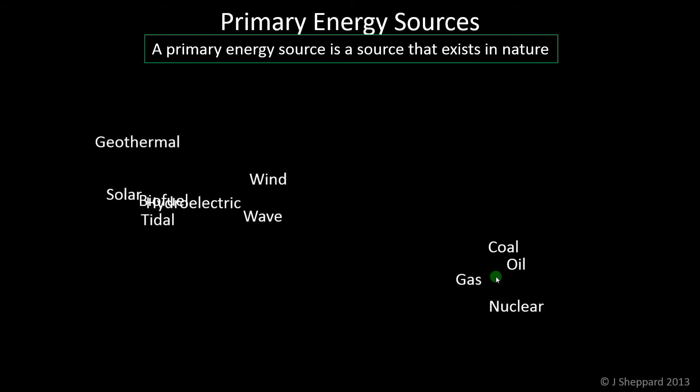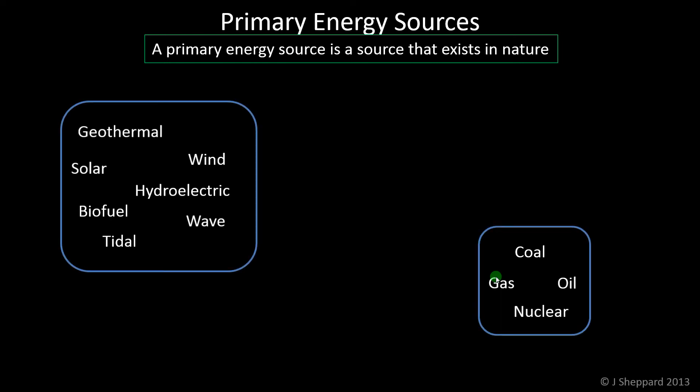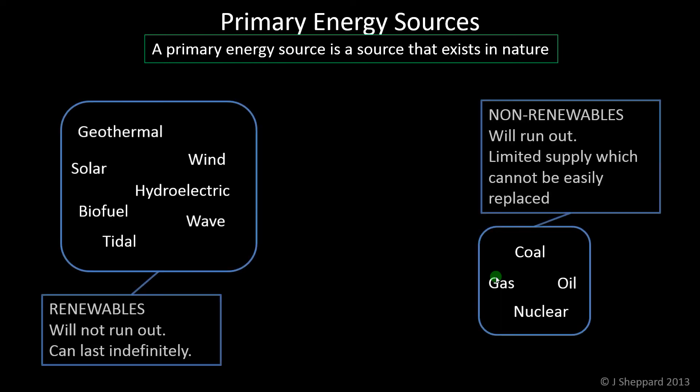The first grouping is renewables and non-renewables. We need to be clear about what those words mean. Renewable resources will not run out — they can last indefinitely. Obviously they'll run out eventually, but we're talking billions of years down the line, so effectively that's forever as far as we're concerned.